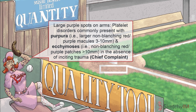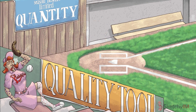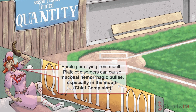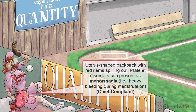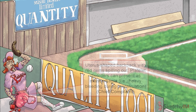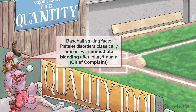Often, what distinguishes bleeding disorders is that patients notice these lesions even in the absence of trauma. Large hemorrhagic bullae, aka blood blisters, can also form in the buccal mucosa, represented by the purple gum flying out of the woman's mouth. In women, platelet-type bleeding can often present as heavy bleeding during menstruation, also known as menorrhagia, represented by the red contents of this lady's cute uterus-shaped backpack spilling out all over the stands. Notably, patients with platelet disorders tend to bleed almost immediately after an injury, in contrast to coagulation factor disorders, in which patients tend to have delayed bleeding since functional circulating platelets can still form an initial plug.